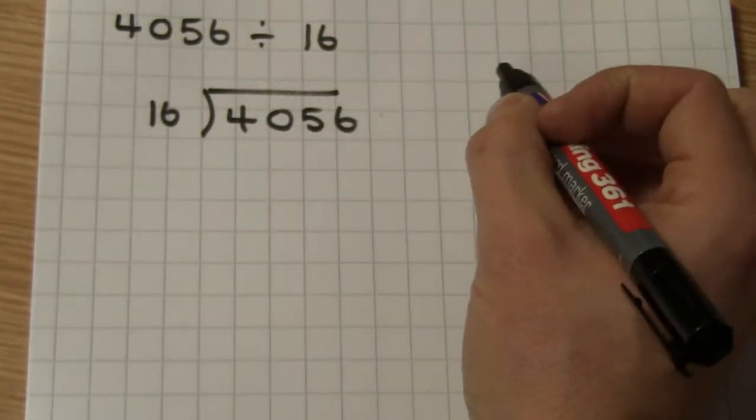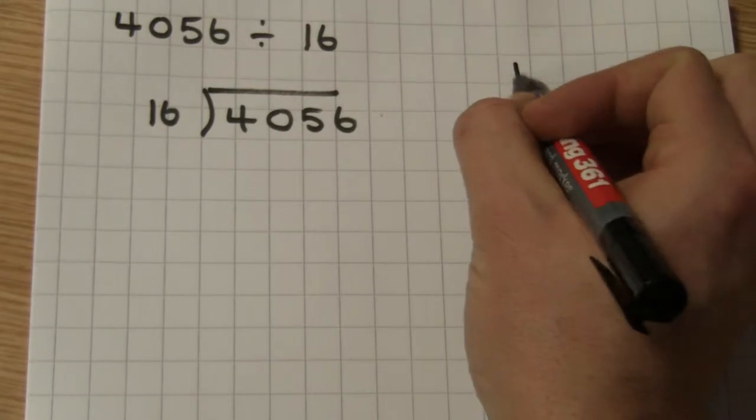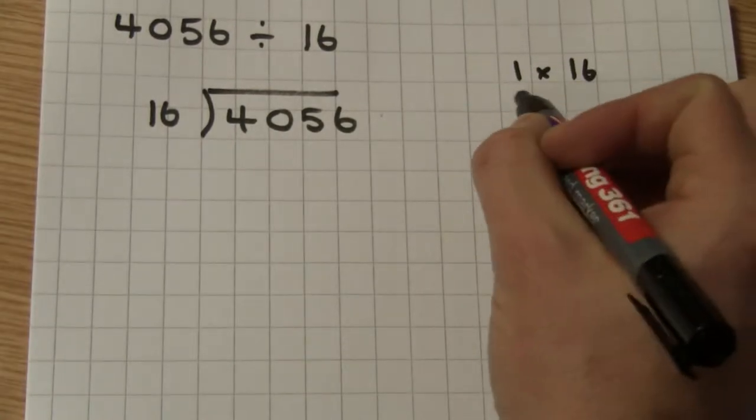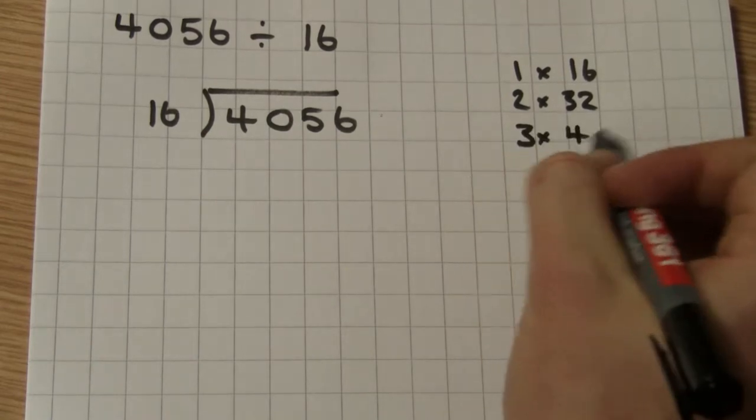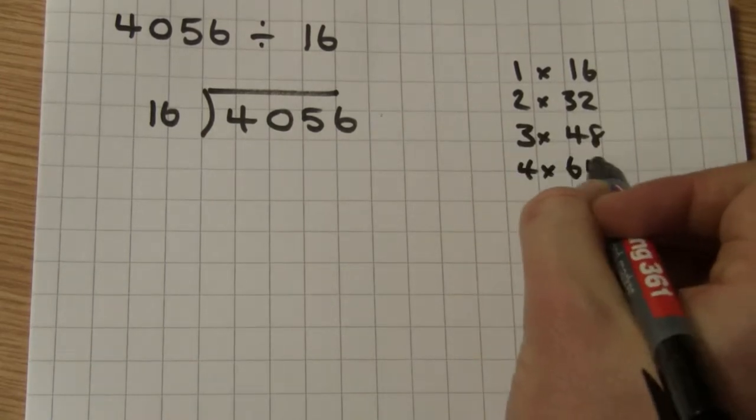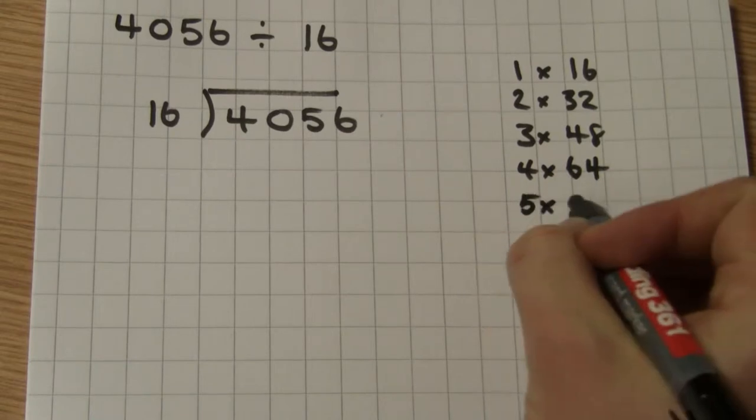I'm just going to write out my 16 times table just in case I need it. One times 16 is 16, two times 16 is 32, three times 16 is 48, four times 16 is 64, and five times 16 is 80.